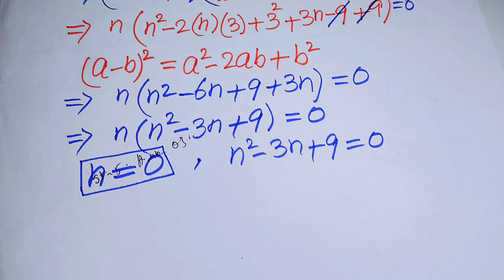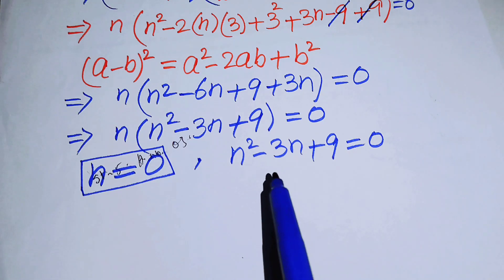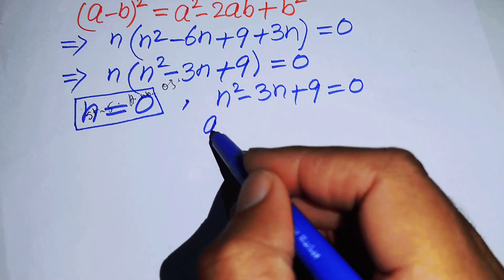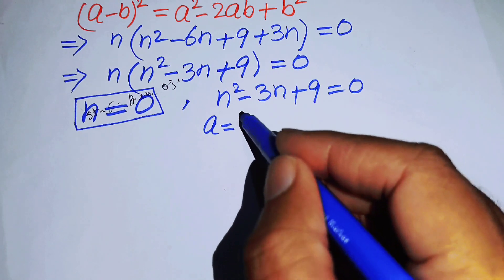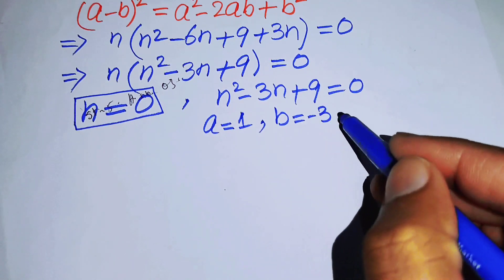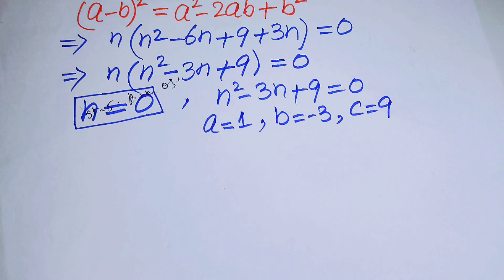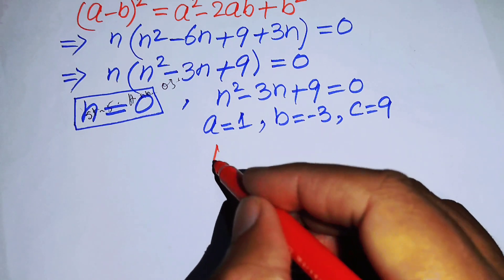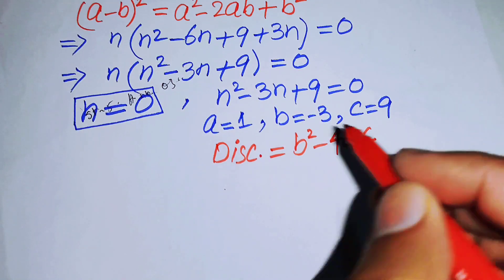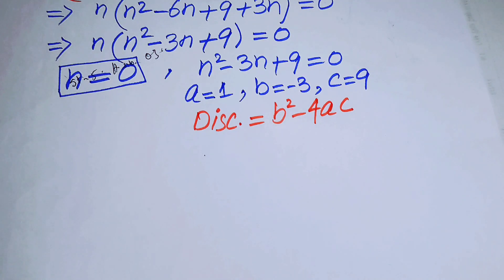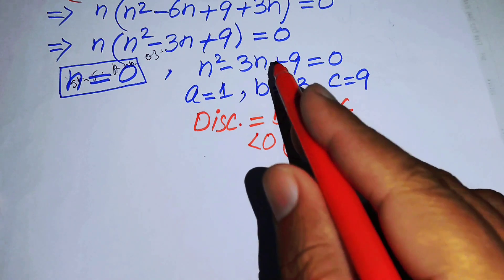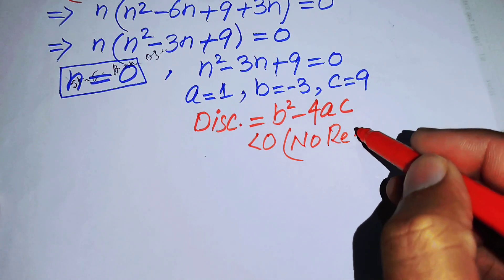To find any other real solutions, we solve the quadratic equation. We first check whether it has real roots using the discriminant formula D equals b squared minus 4ac, where a equals 1, b equals minus 3, and c equals 9. If the discriminant is less than 0, the equation has no real roots.